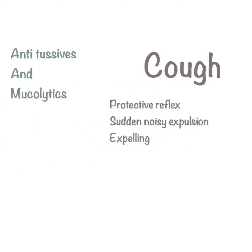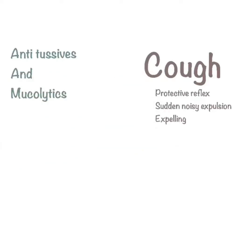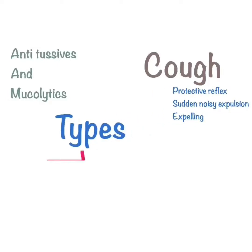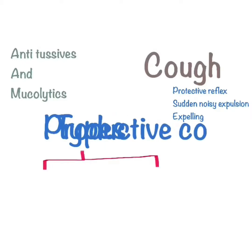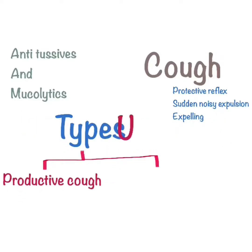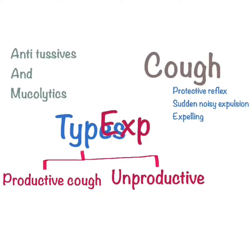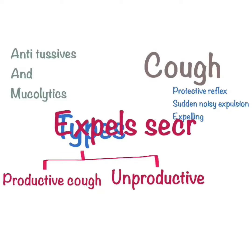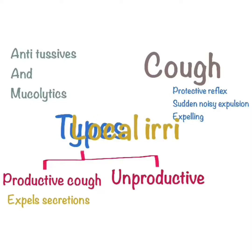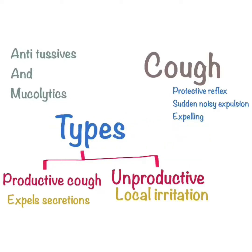If anything is attached in the airway, the cough will clear it. It is basically a protective reflex. Cough has two types: one is productive cough and one is unproductive cough. The productive cough effectively expels secretions and external material from the respiratory tract. If there is an obstruction or irritation, it will expel it. The unproductive cough has some local irritation, for example, smoker's cough.